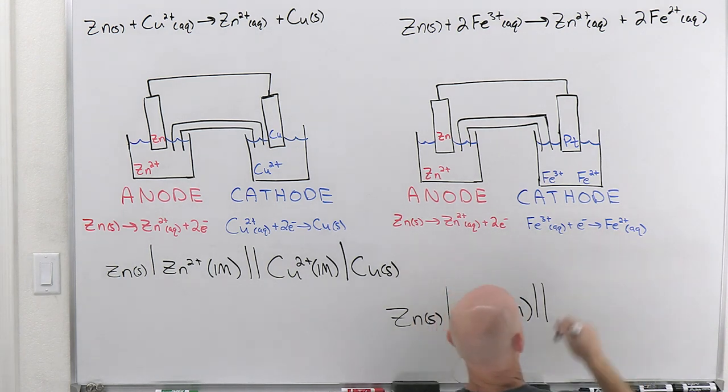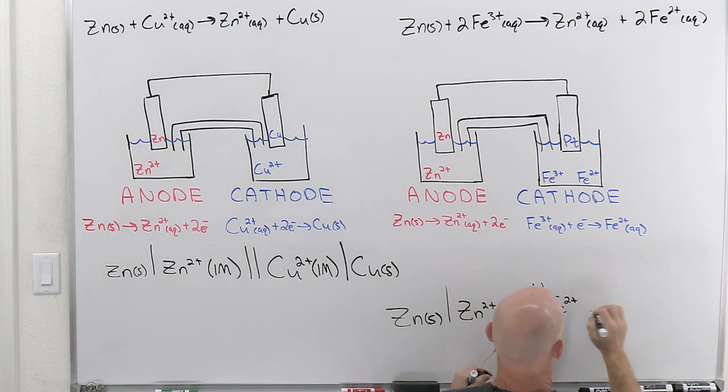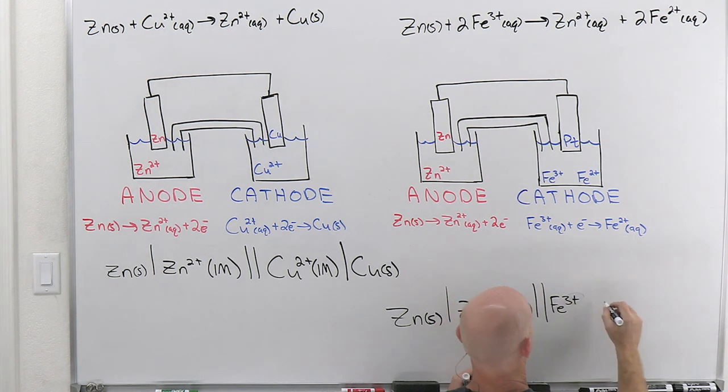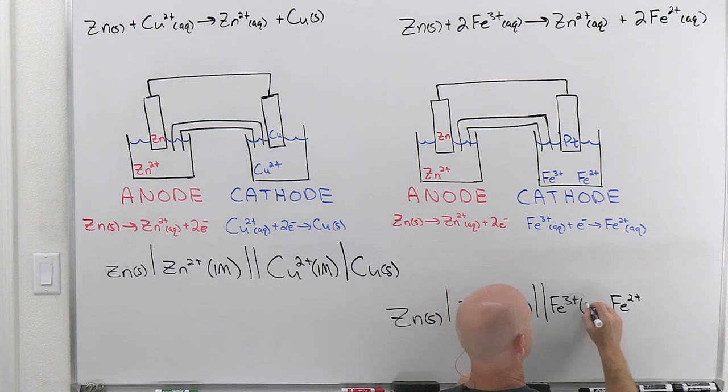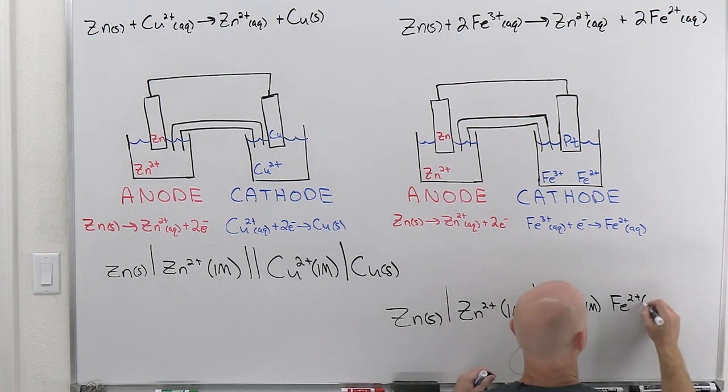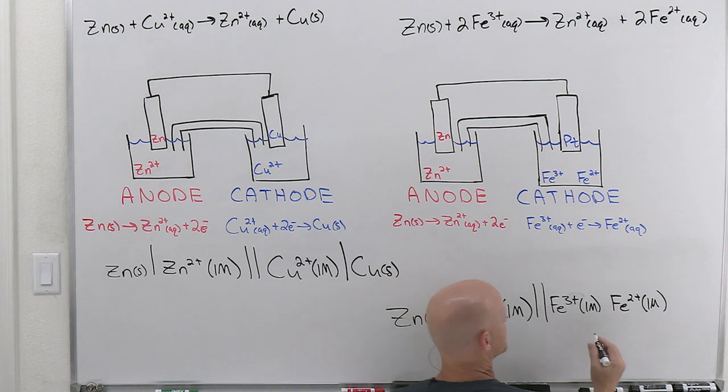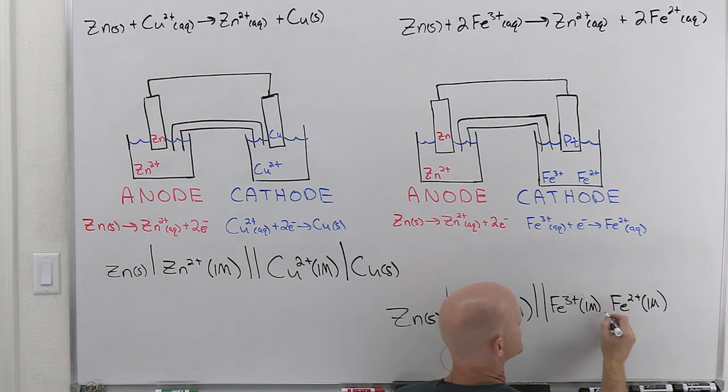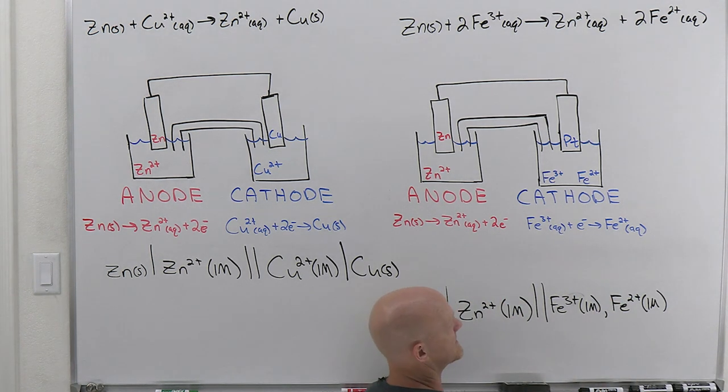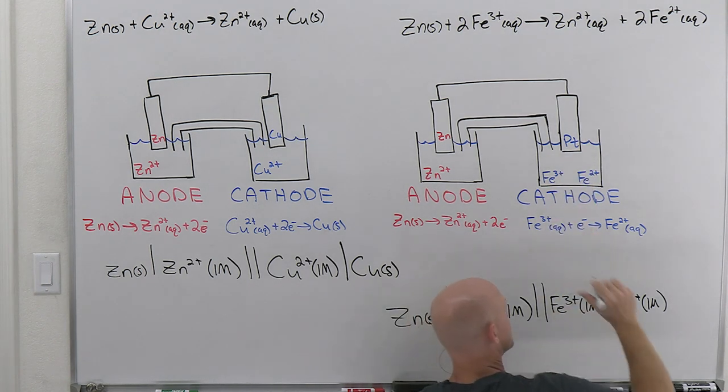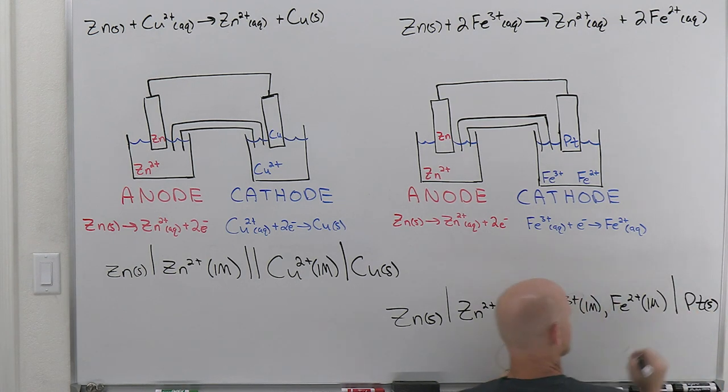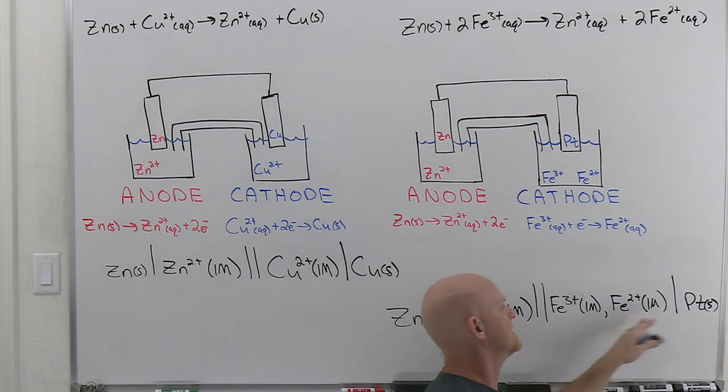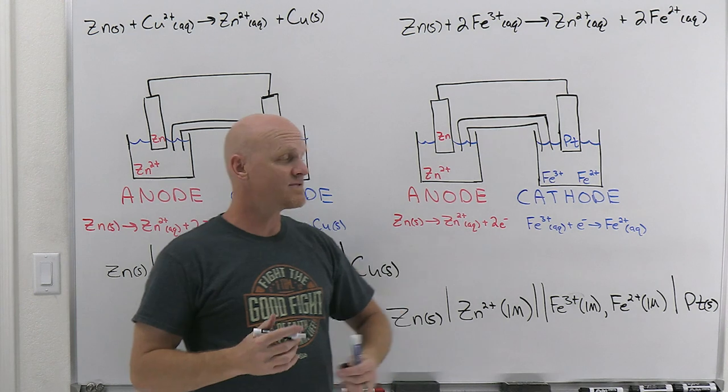And even though that's not actually participating in the half reaction, it is going to be a part of your cell notation here. So in this case, we've got Fe3+, as the reactant, Fe2+, as the product. And again, they're both aqueous, so we should put concentrations. And if we're doing this under standard conditions, they're both one molar concentrations. But they're in the same phase, so we don't put a slash between them. We're just going to separate them by a comma in this case.